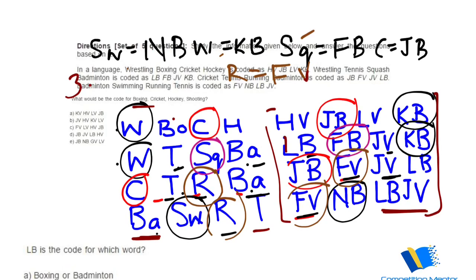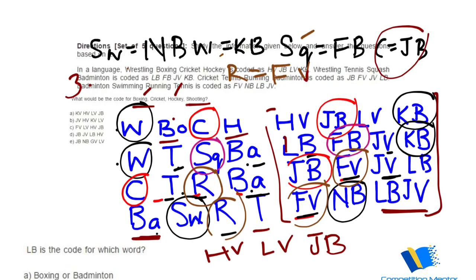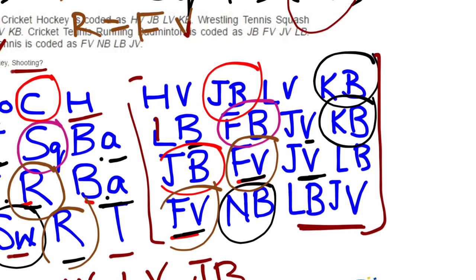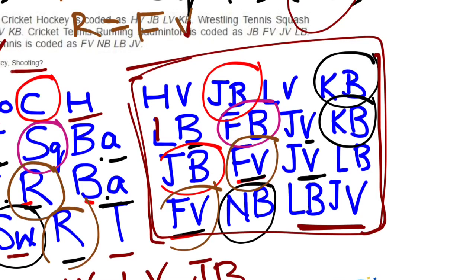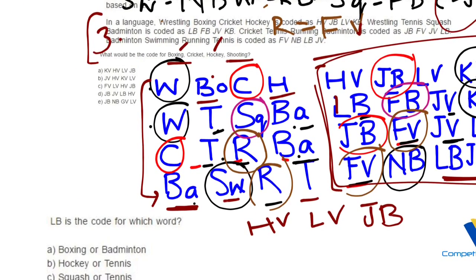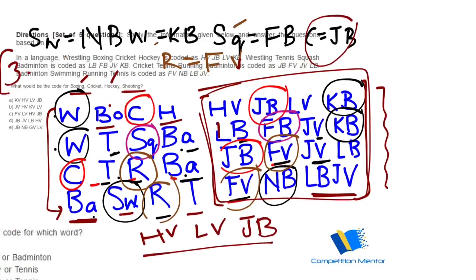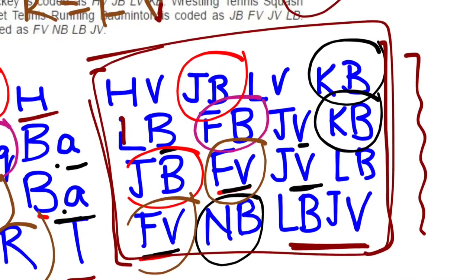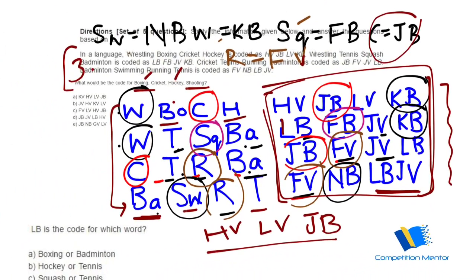This is question number three: what would be the code for boxing, cricket, hockey, and shooting? Boxing and hockey we didn't solve, so those should remain as HV and LV. Cricket we obtained as JB. Shooting was never mentioned — there was squash and swimming, but not shooting. So any code not found in our chart should be the answer. KV is not there in our solved codes, so A is the correct answer — KV represents shooting.